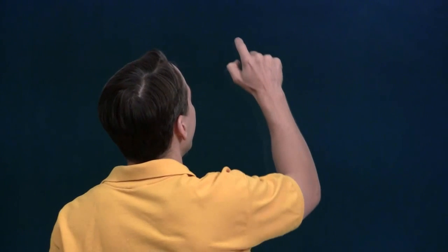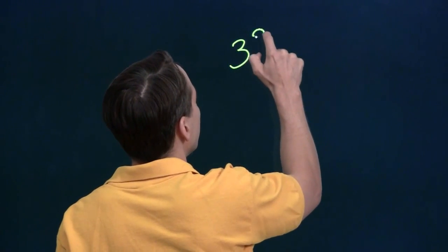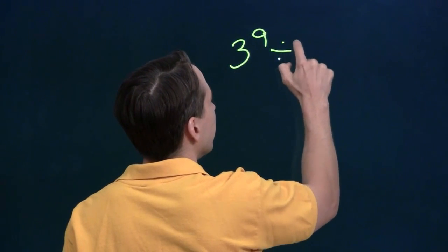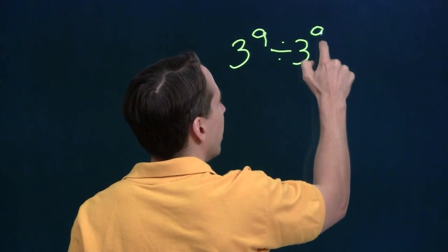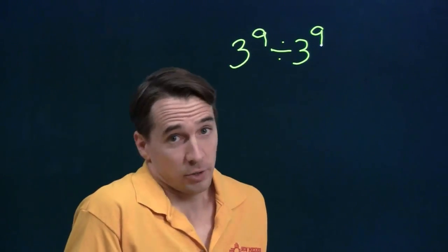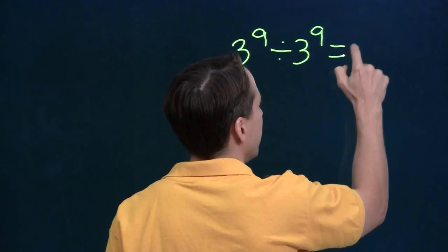I was working on this problem yesterday, and at the end I got to 3 to the 9th divided by 3 to the 9th. Now of course any number divided by itself is 1, so I just quickly wrote down the answer.